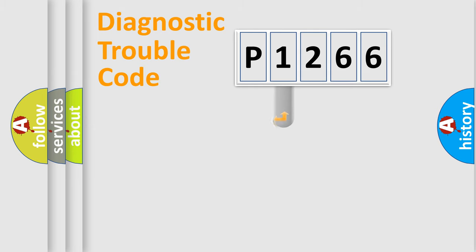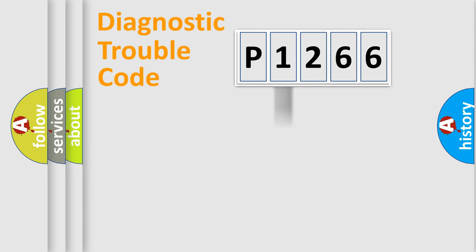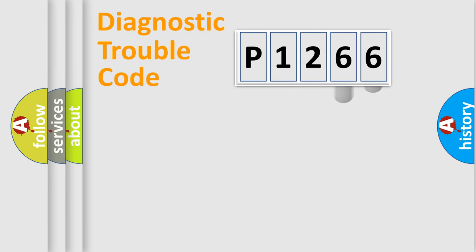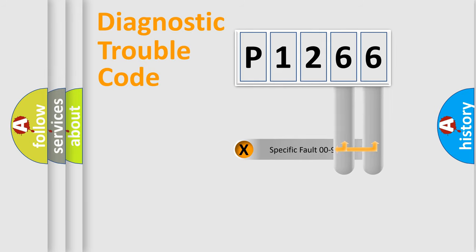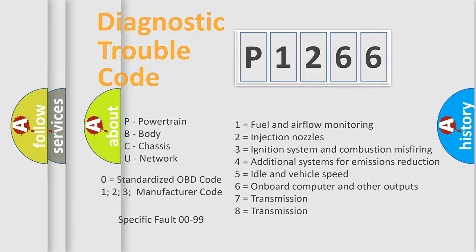This distribution is defined in the first character of the code. If the second character is expressed as zero, it is a standardized error. In the case of numbers 1, 2, or 3, it is a manufacturer-specific error expression. The third character specifies a subset of errors. The distribution shown is valid only for the standardized DTC code. Only the last two characters define the specific fault of the group. Note that such a division is valid only if the second character code is expressed by the number zero.